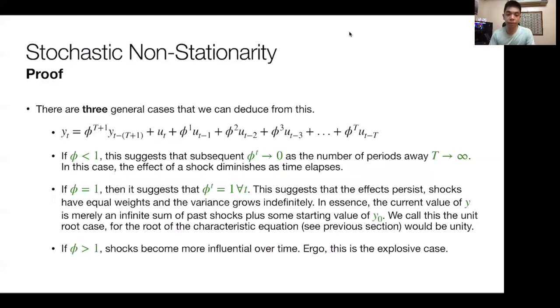If you find that phi is equal to 1, then it suggests that phi to the t, at any time period, is equal to 1. This suggests that the effects persist and that shocks have equal weights and the variance grows indefinitely. In essence, the current value of y, which is our dependent variable, is merely an infinite sum of the past shocks plus its initial value. If I add the initial value of y at time period 1 and added the shocks in between, I would get the current value of y.